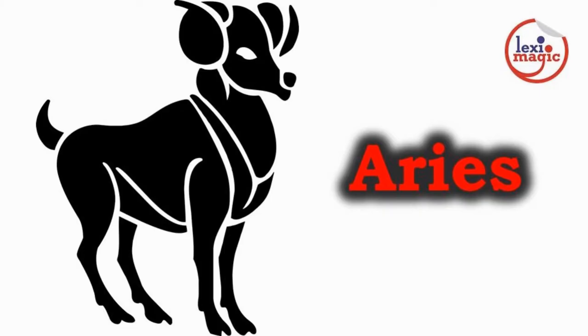Aries is the first Zodiac sign and is represented by a ram. Planet Mars is the ruler of this sign.